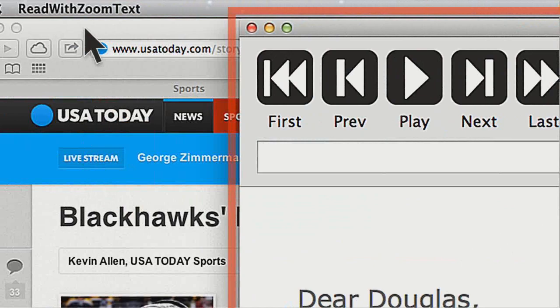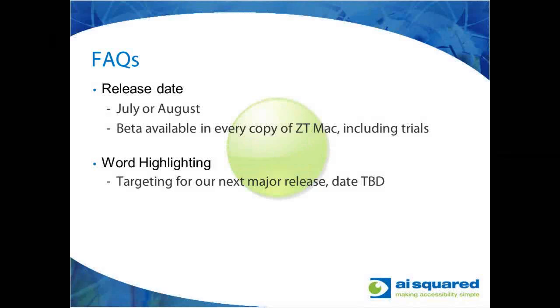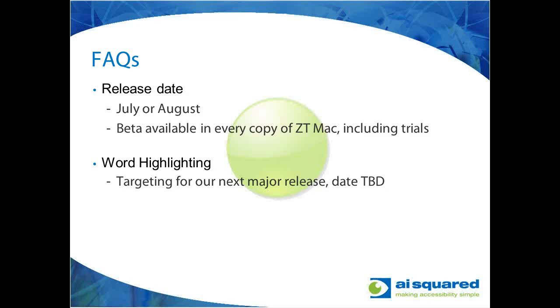There are a couple other things to mention before we open it up to Q&A. A couple of FAQ-type questions — I'm sure people are wondering when we're going to release this. Our current schedule is we plan on releasing this beta feature sometime in July or August. It will be in every copy of ZoomText Mac, even the trials. It will come as an update if you're currently running ZoomText. You'll have a countdown to say how many days you have left to use the feature before it expires.